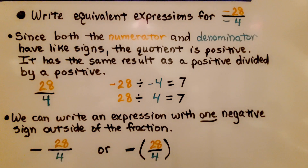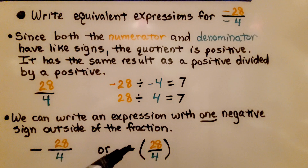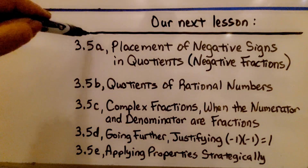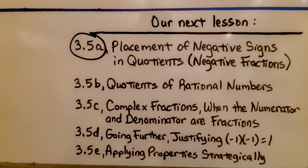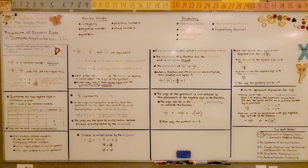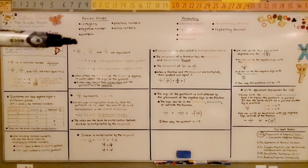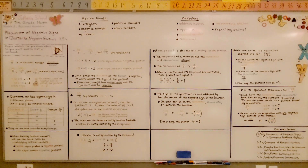We can also write an expression with one negative sign outside of the fraction, or with the negative sign and open parentheses 28 fourths close parentheses — they're equivalent. To summarize: if the numerator has a different sign than the denominator, the quotient is negative. If the numerator and denominator have the same sign, the quotient is positive. The negative sign can be written outside, with the numerator, or with the denominator, and we'll still get the same quotient.